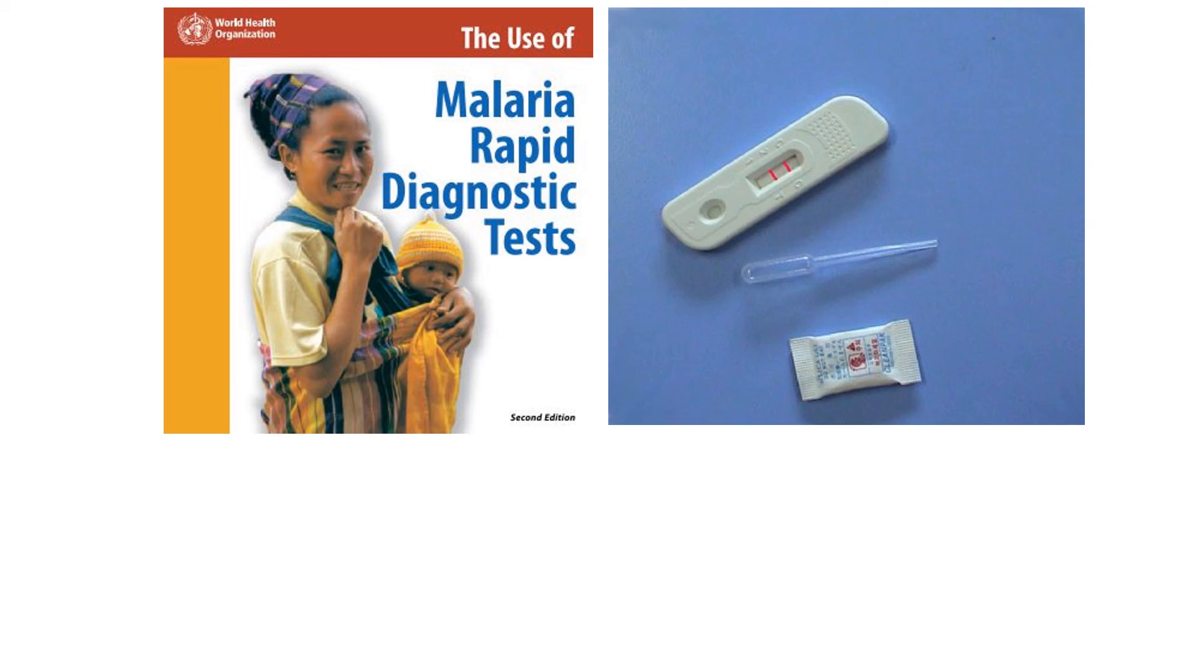Some body fluids are taken and placed onto the stick. You can see the little well on the left-hand side there. If you get a color change, two bars color change as you can see in the picture, would indicate positive. The top one means it's a control to make sure the test is working. The second one down means that's a positive result for malaria. So it's very rapid and very useful in the field to be able to test people and get instant results.